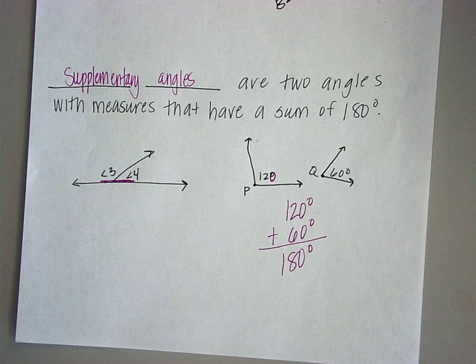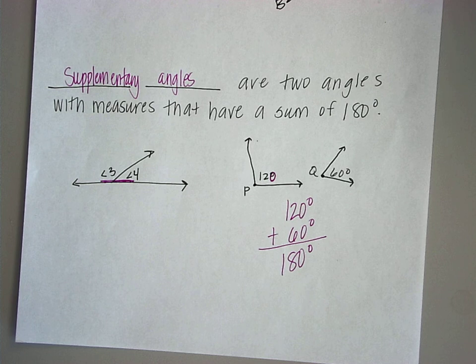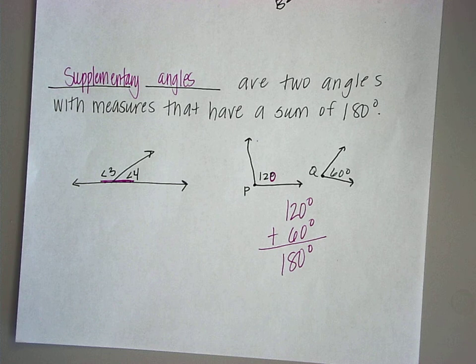So to review: adjacent angles have a common vertex and common side. Vertical angles are two angles formed by two intersecting lines — they are congruent, meaning equal. Vertical angles are congruent — that's a big term you'll need to remember. Complementary angles have a sum of ninety. And finally, supplementary angles have a sum of one hundred and eighty. You need to remember those; they are going to come back in handy.